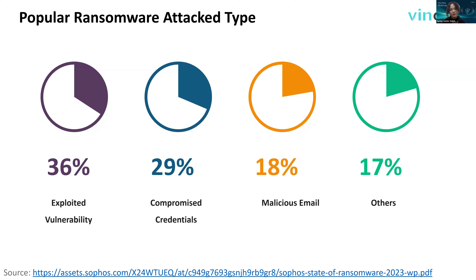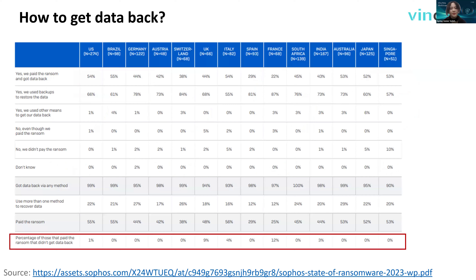We can do something to prevent attacks — like regularly upgrading your system, setting a firewall, using strong passwords, and not opening unknown links. After a disaster happens, how do we get data back? According to the reports, over half use backups to restore data. Some, unfortunately, have to pay the ransom. Some not only pay the ransom but also use any other possible means. Importantly, some paid ransom but still didn't get their data back.